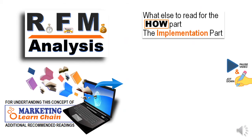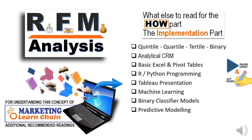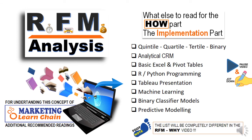We close this Marketing Learn Chain with additional recommended readings for RFM Part 2. Understand what quintile, quartile, tertile, and binary mean and the advantages and disadvantages of each. Look at analytical CRM, which is the opposite of operational CRM covered in Part 1. Try to understand Excel basics and pivot tables. The whole analysis can be scaled up into R and Python programming and presented in Tableau. The game scales up to machine learning — if it is a binary option it goes to classifier models, predictive modeling, and so on.